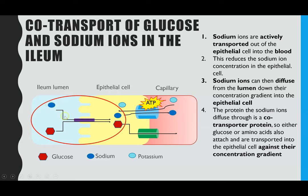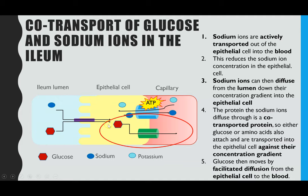The protein that the sodium ions diffuse through is a co-transporter protein — meaning two different molecules attach before either of them are transported to the other side. The sodium ions attach to their complementary receptor site, which then enables glucose molecules to attach. Once the glucose attaches, the sodium can be released on the other side, and that then enables the glucose to be released on the other side too. So they are transported together, which is why it's co-transport. This builds up glucose within the epithelial cell, enabling glucose to then move down its concentration gradient from the epithelial cell into the blood in the capillary by facilitated diffusion.